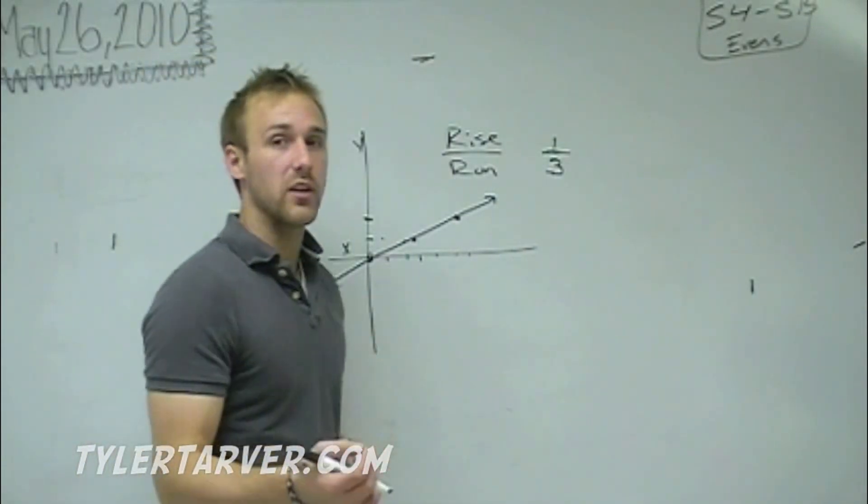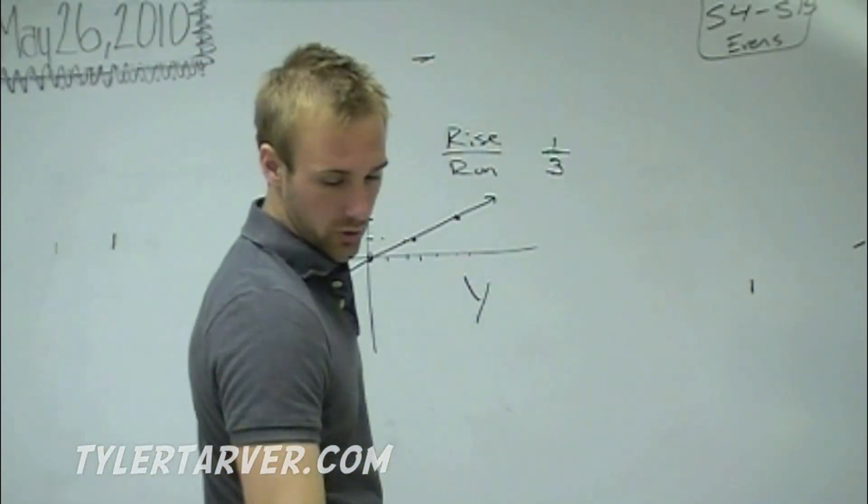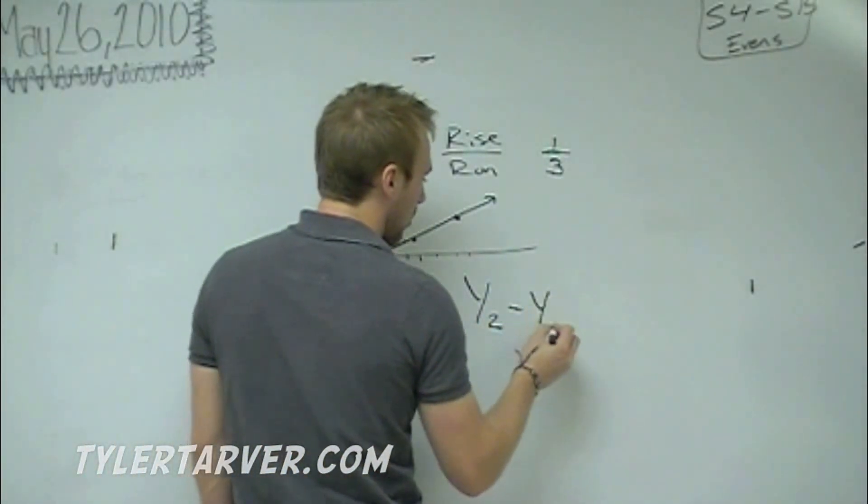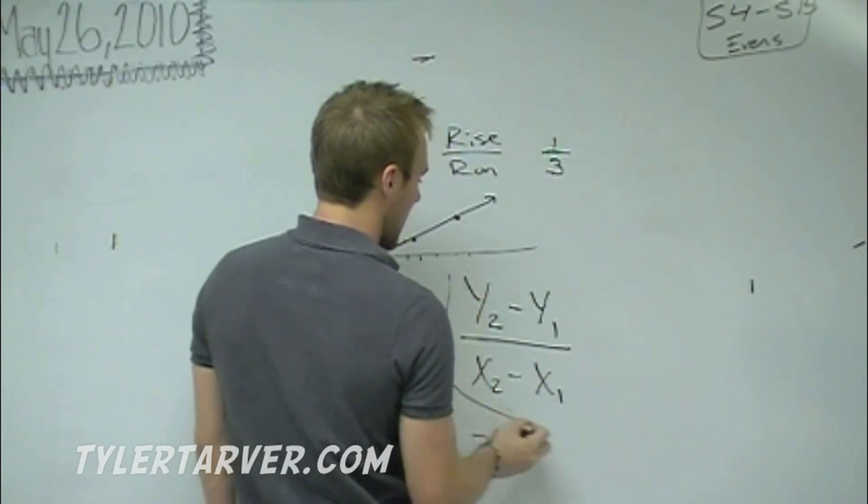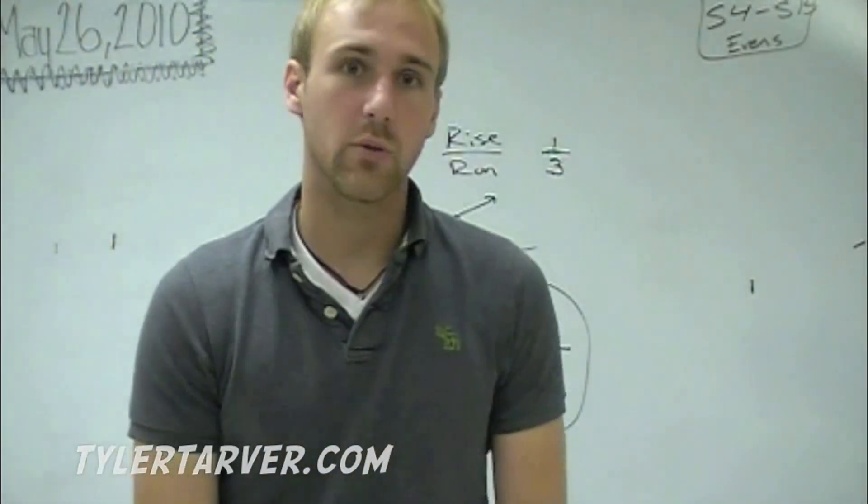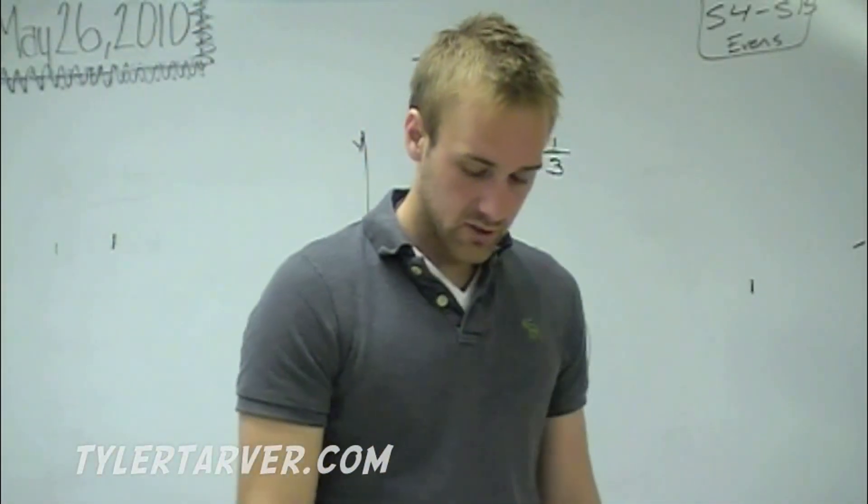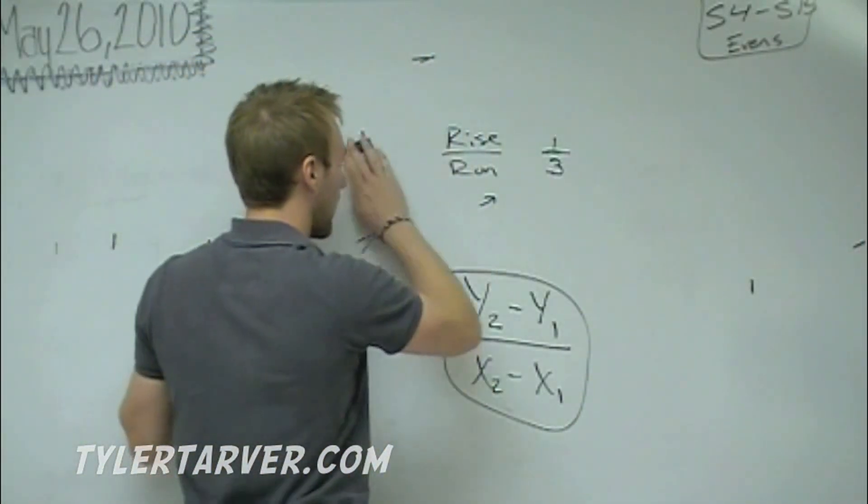Now, there's also a formula to find the slope. Y2 minus Y1 over X2 minus X1. That's the slope formula. That's money. That is exactly what you need to know. So if you don't have that written down somewhere, write it down. So, we did one where you counted rise over run. Let's do one where we do the formula.